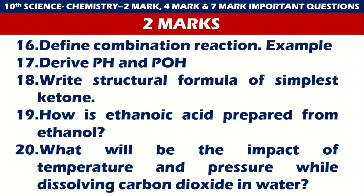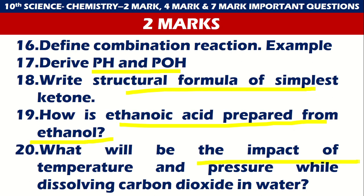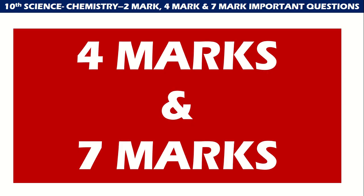The next five two-mark questions are: define combination reaction with example, derive pH and pOH, write the structural formula of simplest cation, how is ethanoic acid prepared from ethanol, and what will be the impact of temperature and pressure while dissolving carbon dioxide in water. These are very important for your public examination.